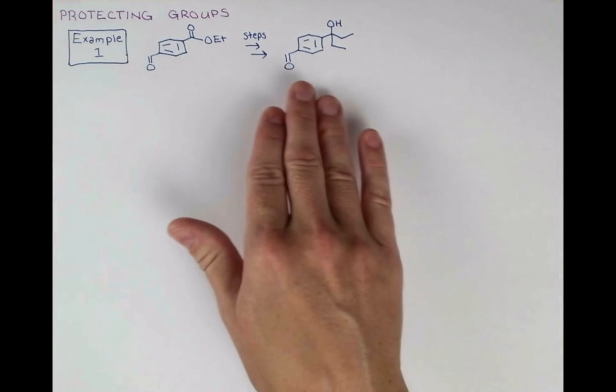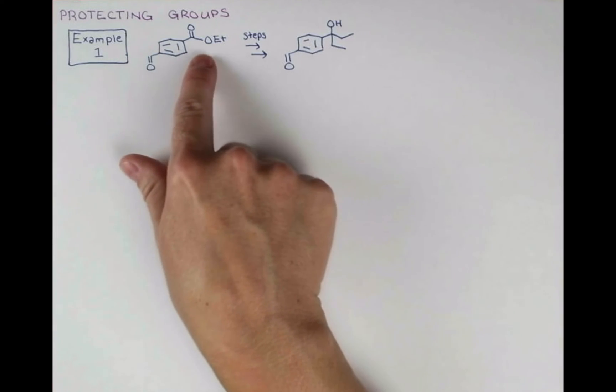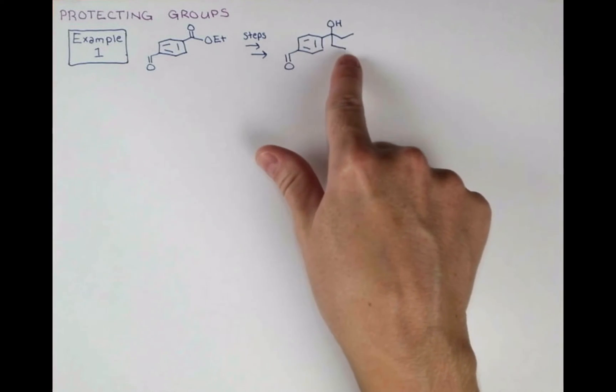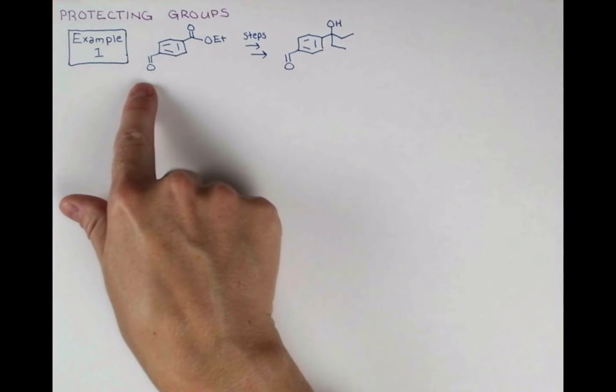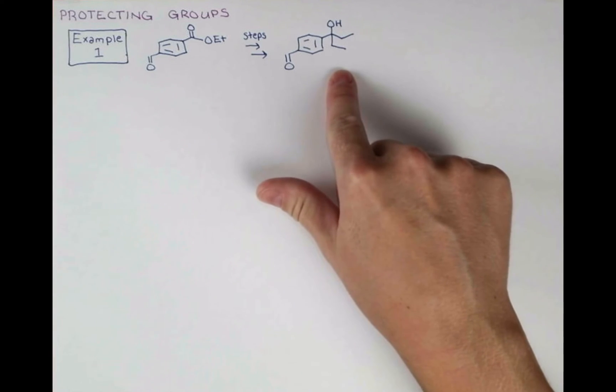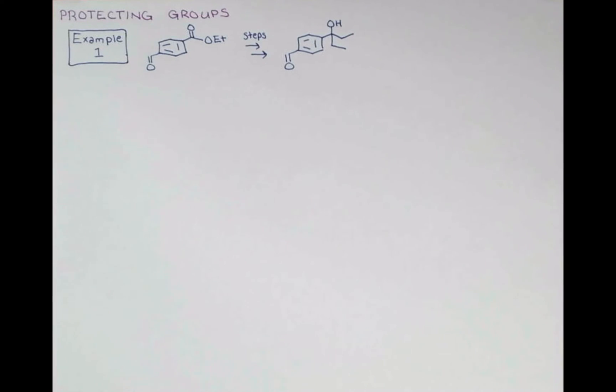Say that we want to carry out the following synthesis. We want to convert this ethyl ester into this tertiary alcohol over here. We have an aldehyde on the molecule, and we want that to remain as an aldehyde throughout the course of the reaction. First, let's devise our general reaction sequence that will allow us to perform this reaction and get our tertiary alcohol.